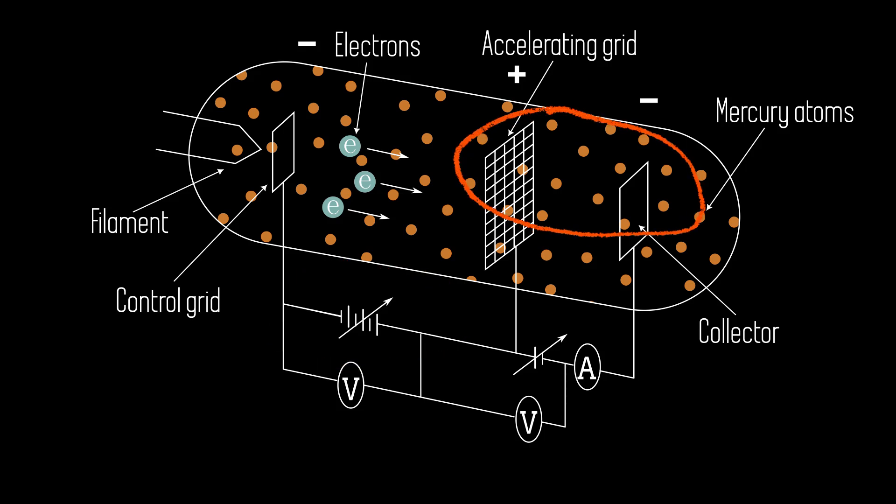A so-called stopping potential is applied between the accelerating grid and the collector. Only high energy electrons can overcome this repulsive electric field and reach the collector. The collector's current is a direct measure of how many high energy electrons reach the collector. Simple, but also very clever.